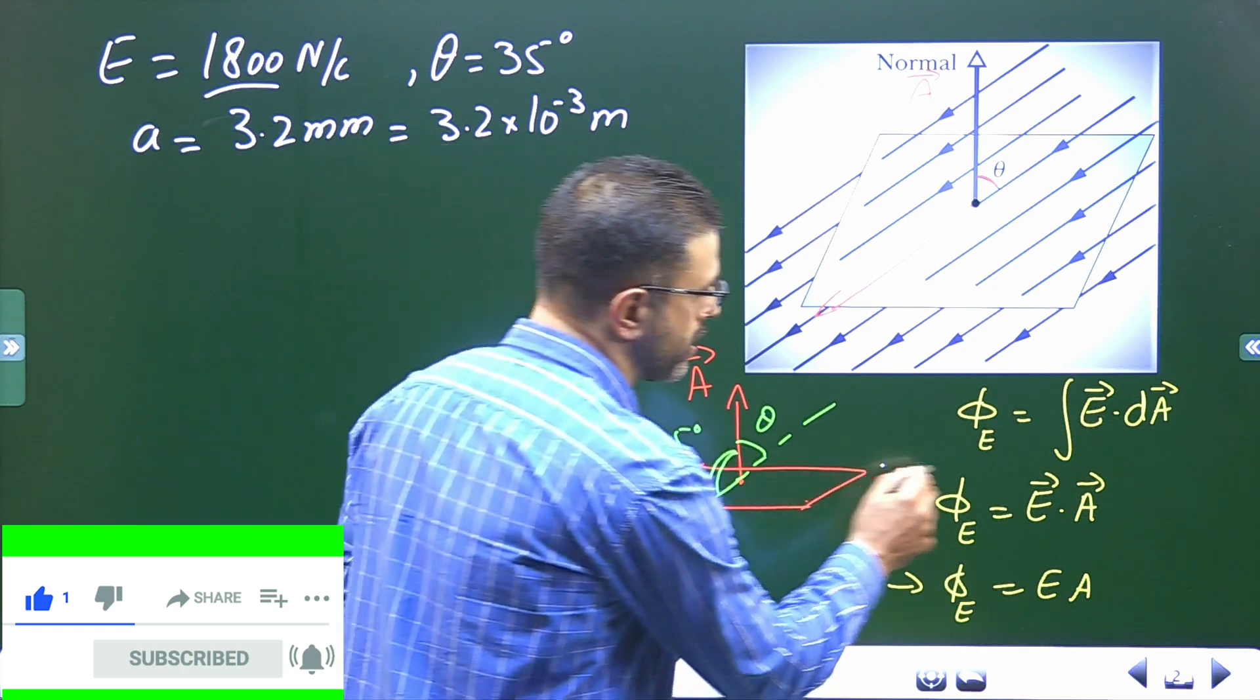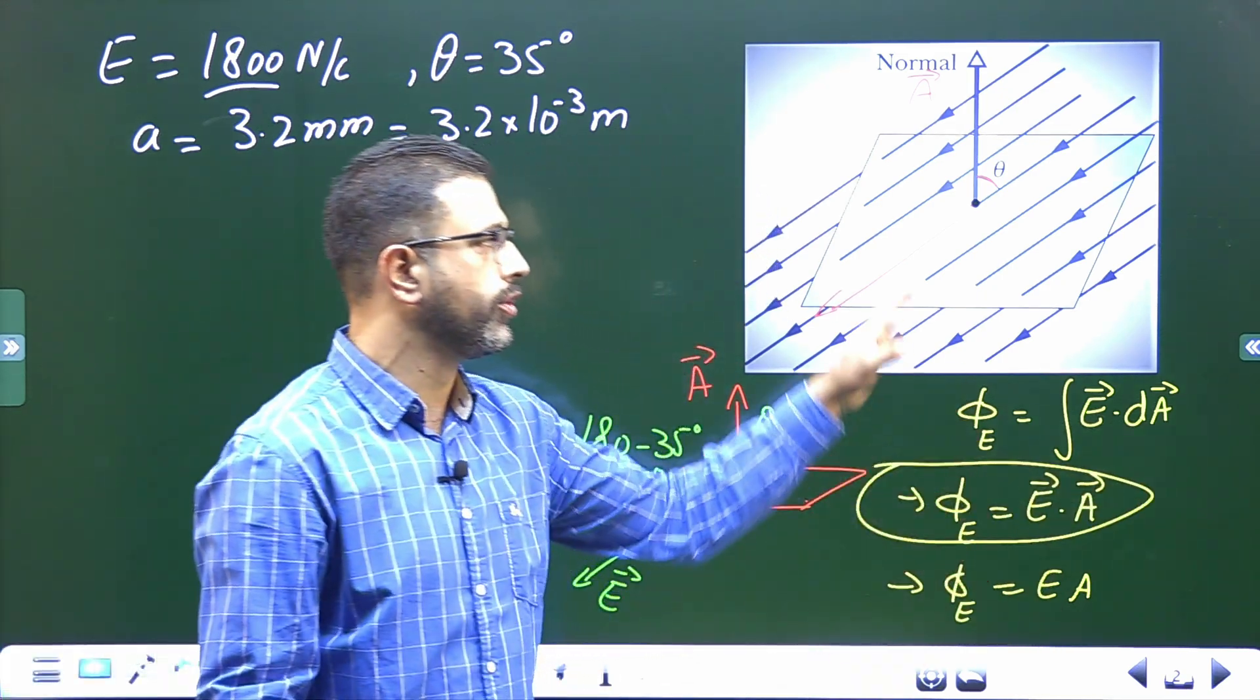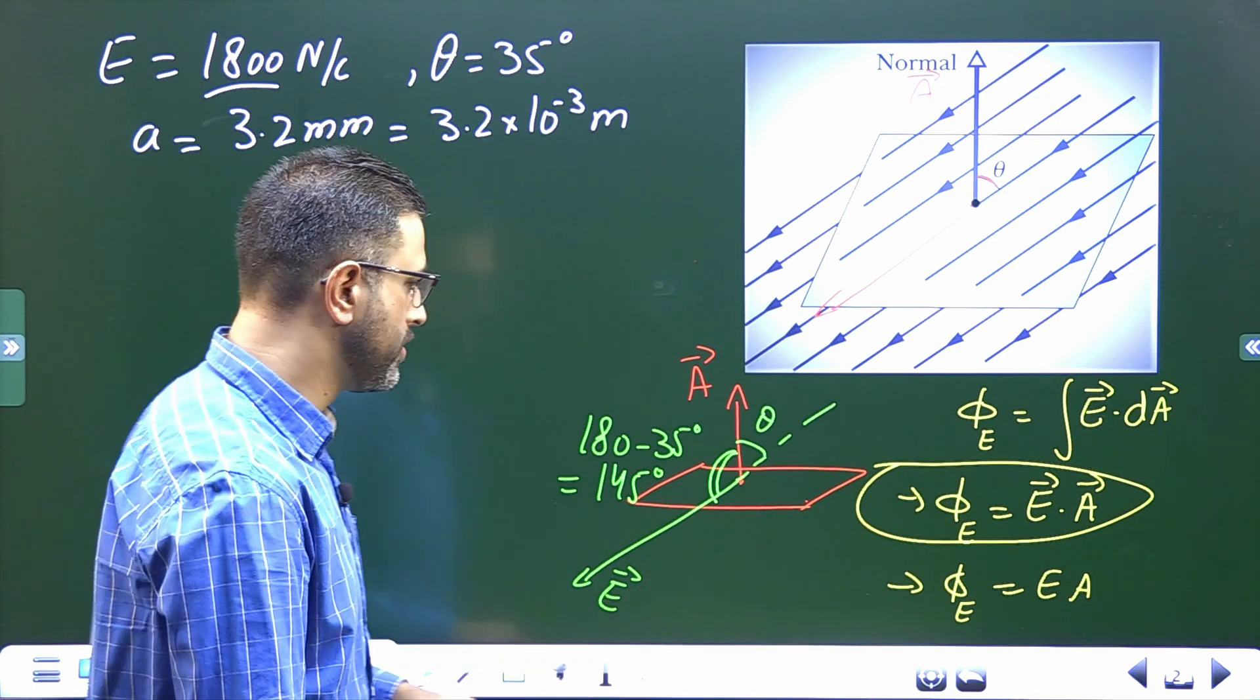So in this case, we will be using this one because electric field is uniform and surface is plain.